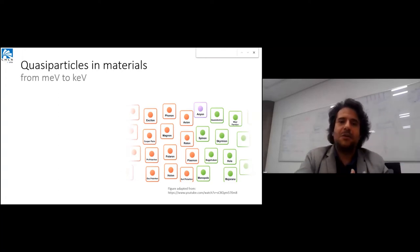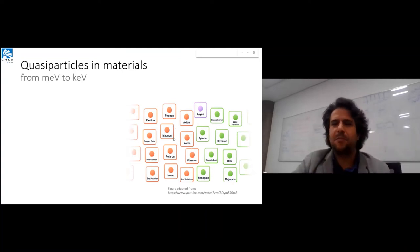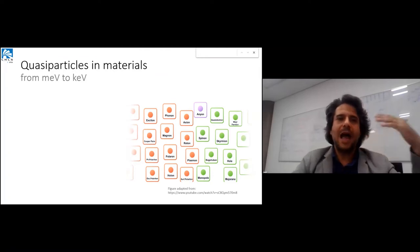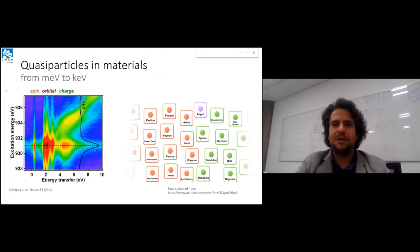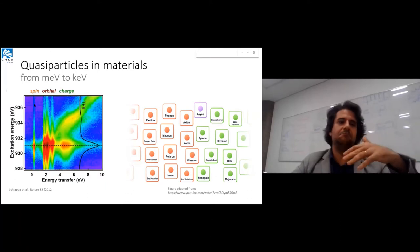We have many different kinds of particles that build this new reality: spinons, holons, skyrmions. All these quasi-particles are part of reality between millielectronvolts and kiloelectronvolts. For instance, this result from resonant elastic x-ray scattering shows the reality of particles that carry spin but no charge, or excitations that carry charge but no spin, or ones that carry orbital moments but neither.